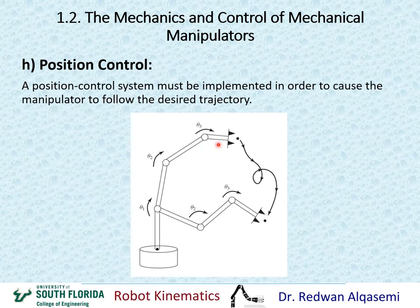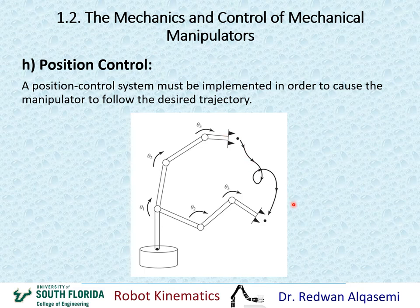When we want to control the robotic arm to follow a specific trajectory, we call this position control. You want the robotic arm or end effector to move precisely within the specified trajectory. That desired trajectory must be designed first, and then you can do position control to move through it.